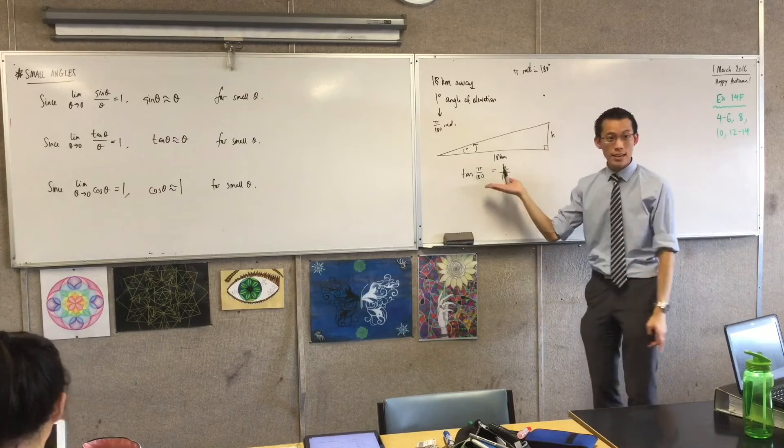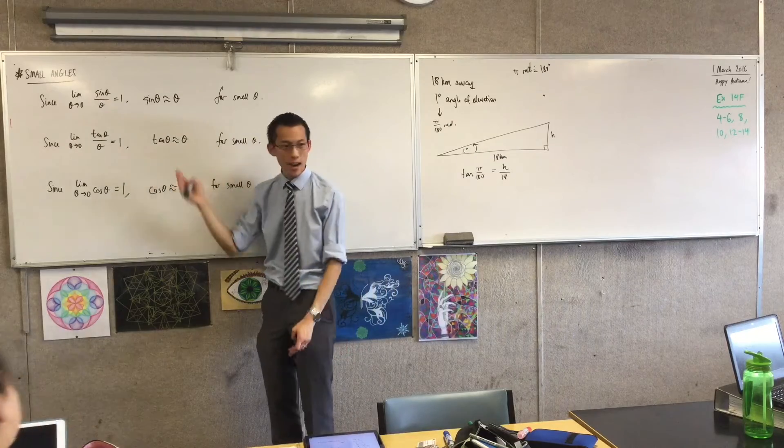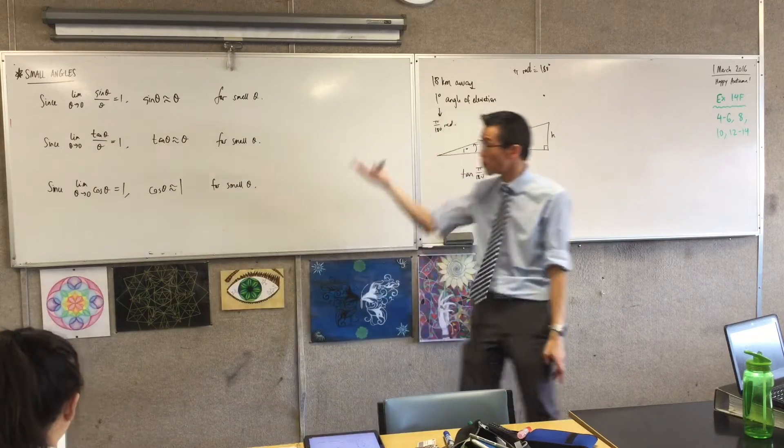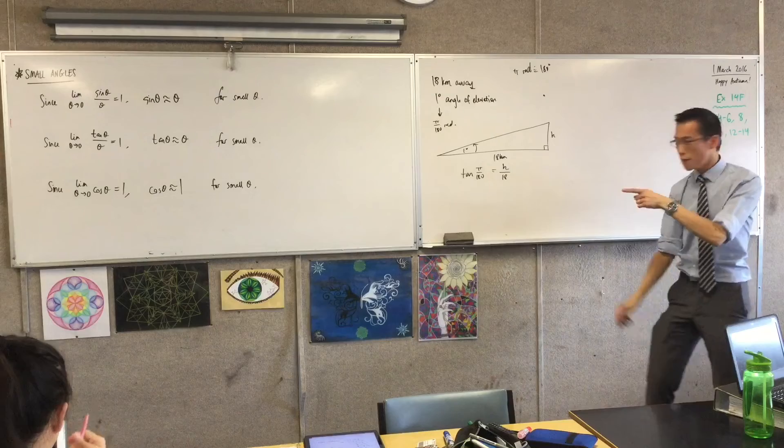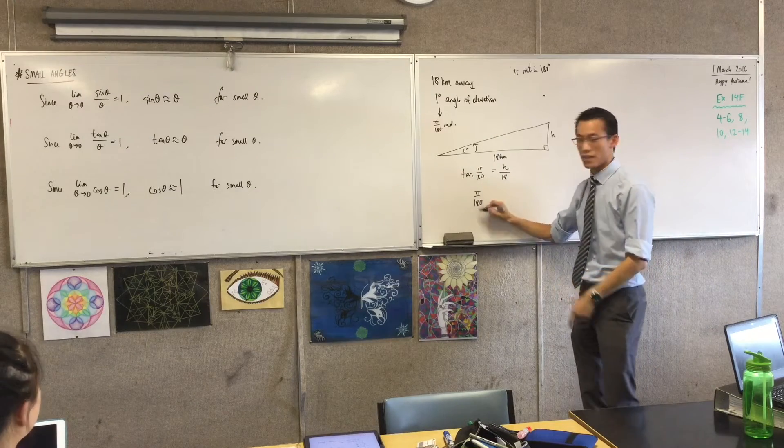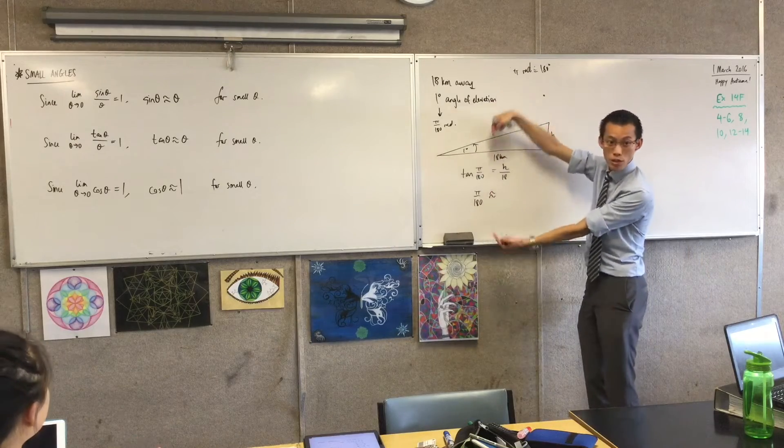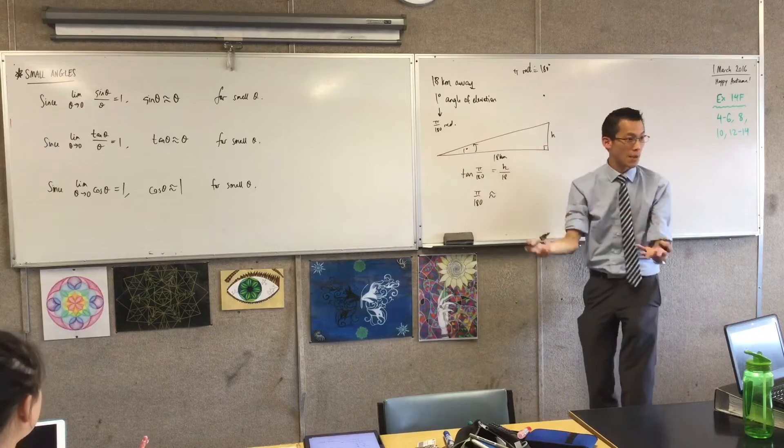But because theta, the angle, is so very small, tan theta and theta are about the same. For small angles, that's what's happening. So therefore, I can substitute this for pi on 180. And say I'm approximately equal to that. These two, for small theta, are behaving the same way.